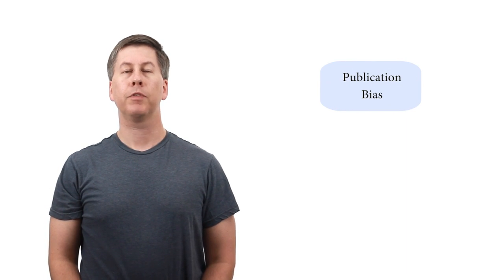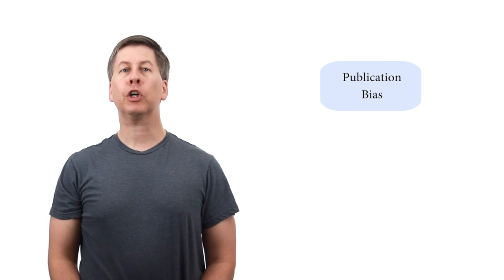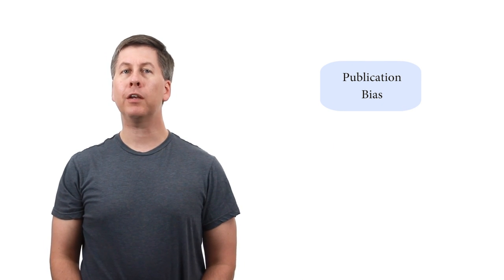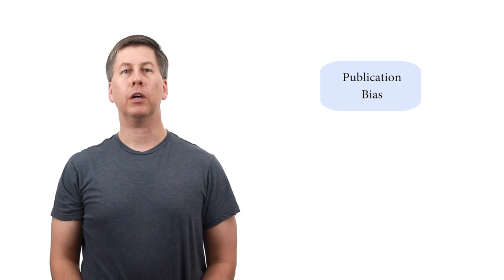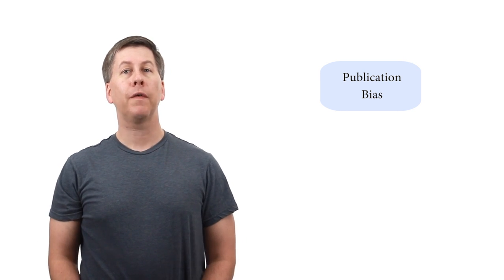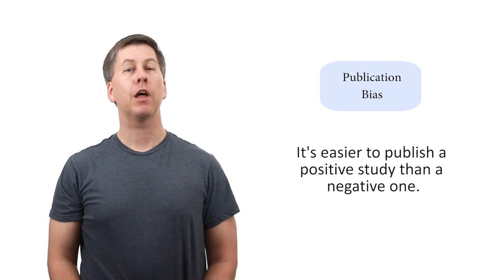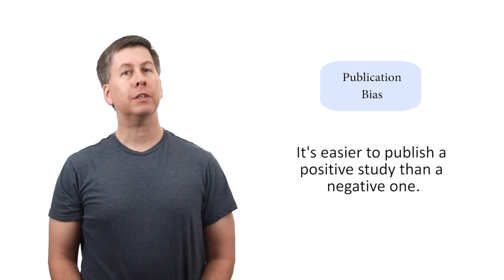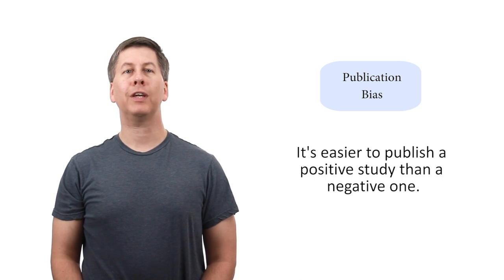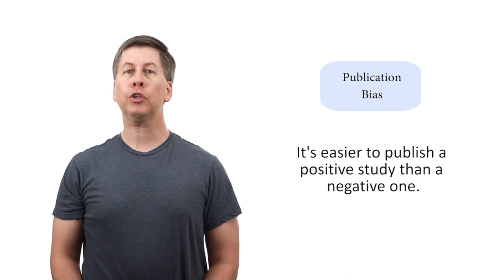The second major factor contributing to unreliable research is called publication bias. Publication bias is different than systematic bias in that it occurs after a study has been completed and is not generally under the control of study investigators. Publication bias refers to the well-described phenomenon in which it's easier to publish a positive study than a negative one, where a positive study is considered to be one in which a newer intervention led to a better outcome than its control did.